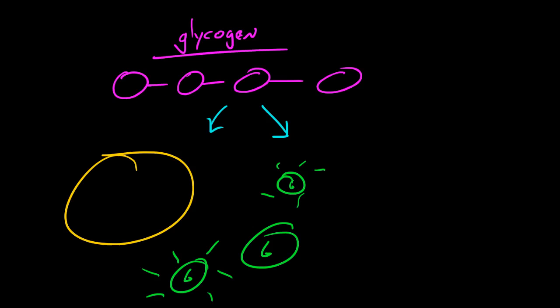And whenever your cells have all the energy they need for now, they don't want to get rid of that extra glucose. So what they do is they store it in a polysaccharide called glycogen. That way your cells can use, whenever they need glucose, they can break this up and use it later on.